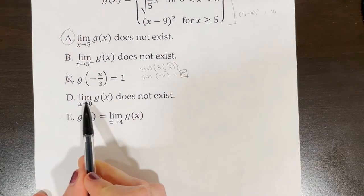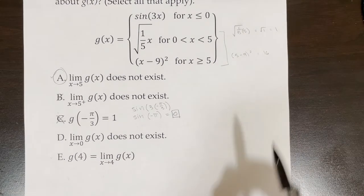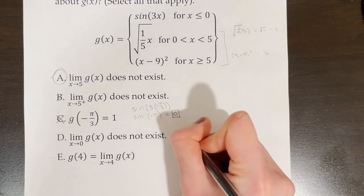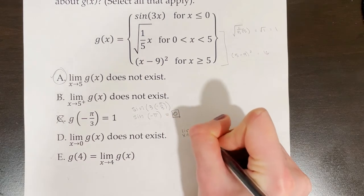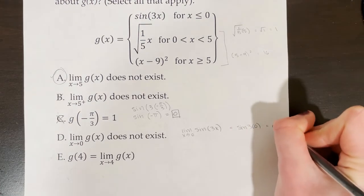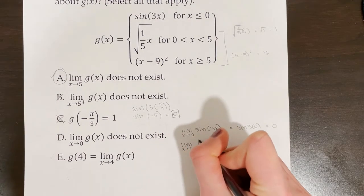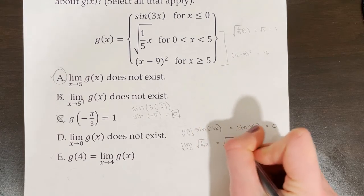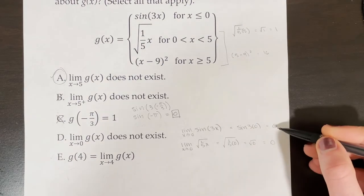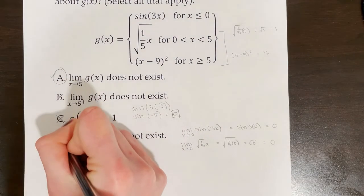Statement D asks if the limit of g of x as x approaches 0 does not exist. We check both sides. Left-sided limit: the limit of sine of 3x as x approaches 0 equals sine of 0, which is 0. Right-sided limit: the limit of the square root of (1/5)x as x approaches 0 equals the square root of 0, which is 0. Both sides match, so the limit exists and equals 0 — statement D is false.